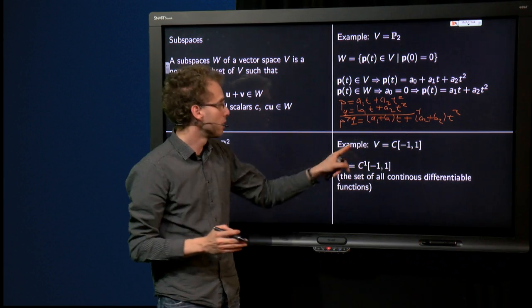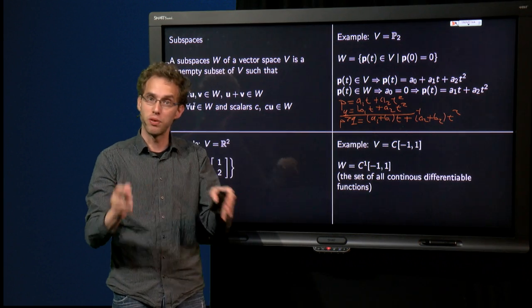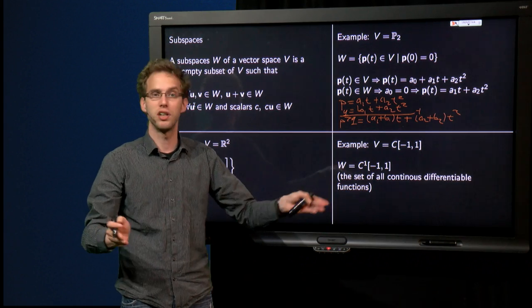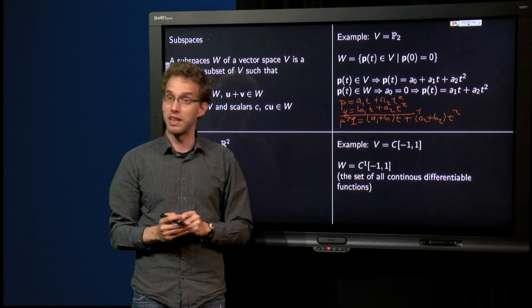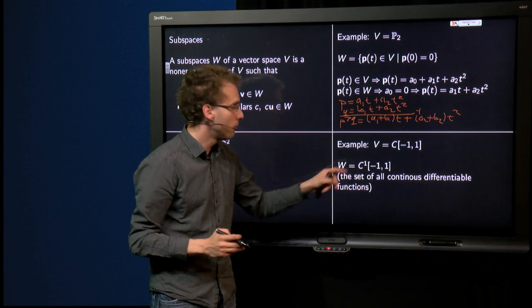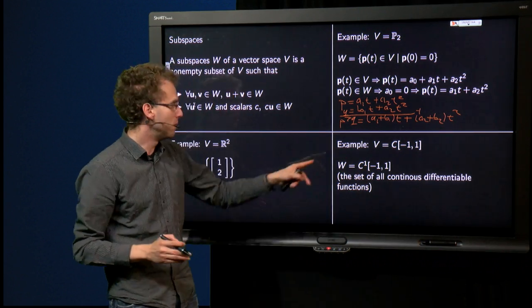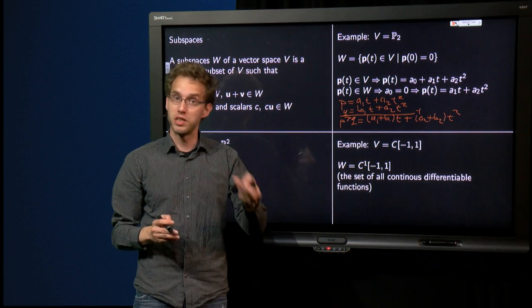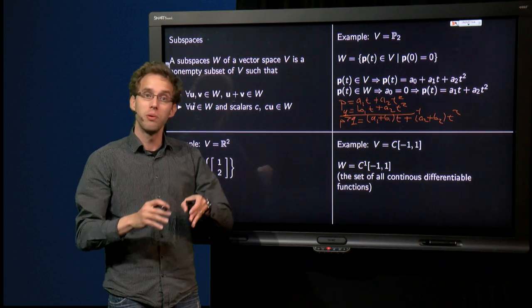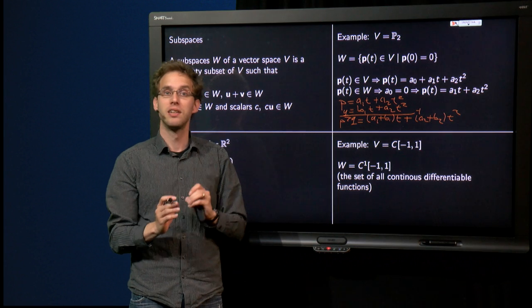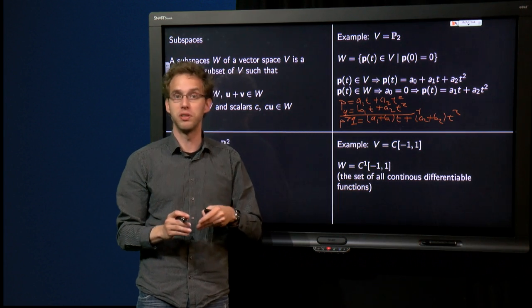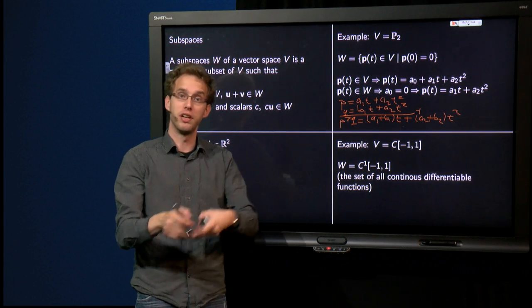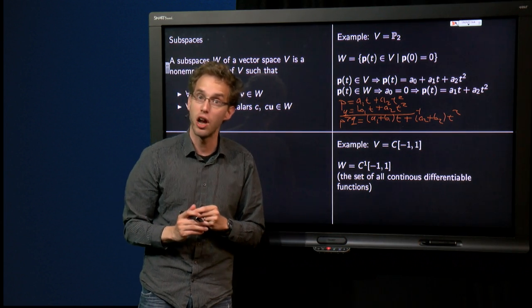Last example, suppose you take the continuous functions on [-1, 1], so lots of functions are there like x², sin x, cos x, whatever you like, and then we can take a subset W, C¹[-1, 1], which means that they are once differentiable. Well, this is certainly a subset of the continuous functions, because if a function is differentiable then it is also continuous, as you learned in calculus class.